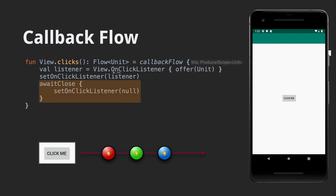Under the hood, a producer scope implements both a coroutine scope and a send channel. We offer our units to the channel part, turning our click callbacks into a stream of click events. Then for the last step, in a callbackflow we must always call awaitClose. Without this, the flow would immediately terminate. When we call awaitClose, execution suspends, and we'll only continue this coroutine when our flow consumer is canceled. This approach was originally copied from Zach Sweer's catch-up GitHub project — you'll find the link to that and other references below.